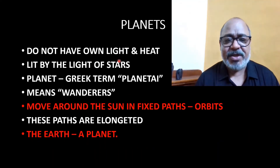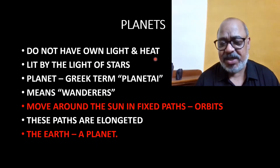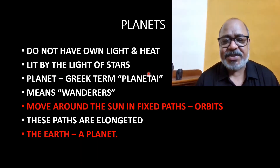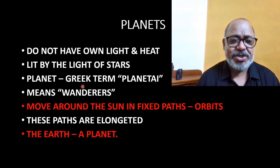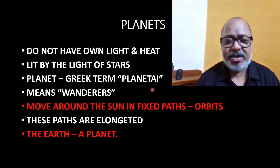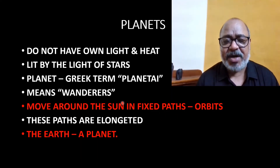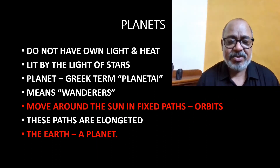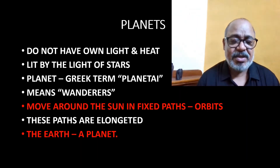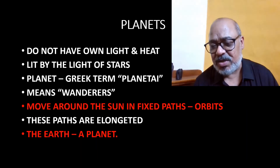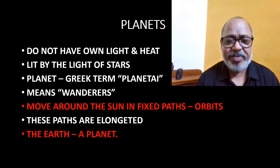Planets do not have their own heat and light — they get heat and light from the sun, lit by the light of stars. The sun is the brightest star. As mentioned, 'planet' is derived from the Greek term 'planetai', meaning wanderers. Planets move around the sun in a fixed path called an orbit. These paths are elongated, and the Earth is also a planet — the blue planet.